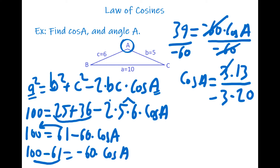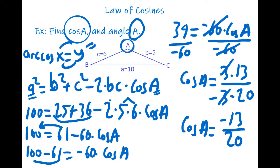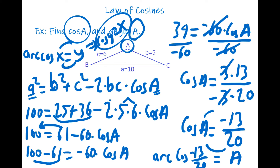After canceling, cosine A equals negative 13 divided by 20. We are also asked for the value of angle A. Using the arc cosine property — if cosine y equals x, then y equals arccos x — we get angle A equals arccos(−13/20). Calculating from a calculator, A is approximately 130 degrees.